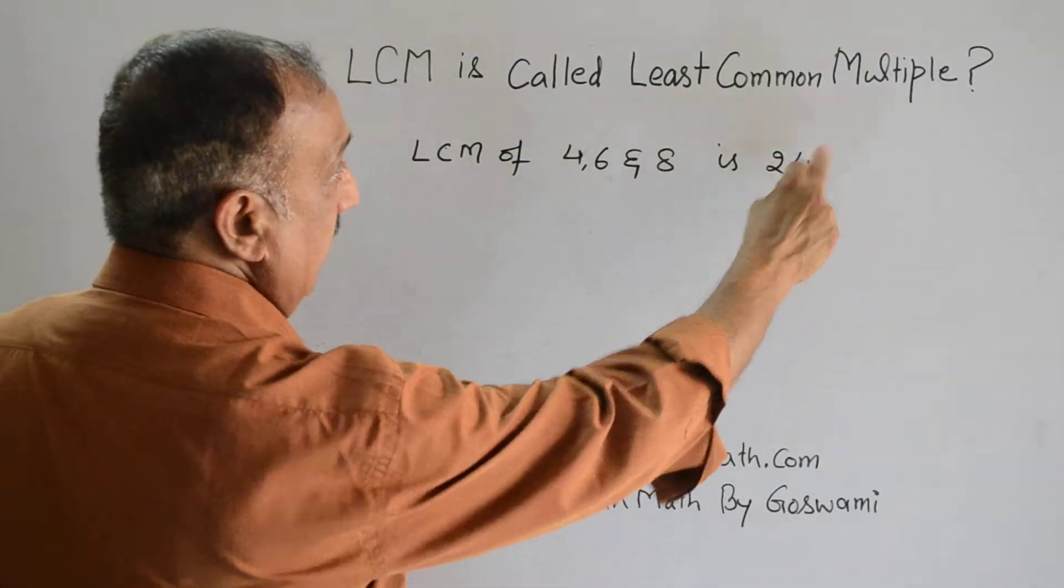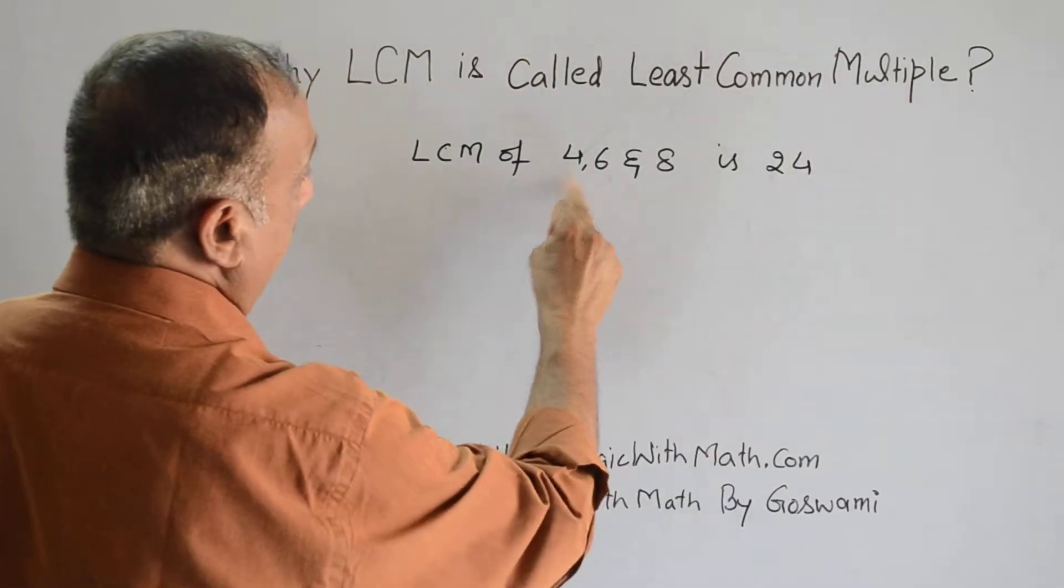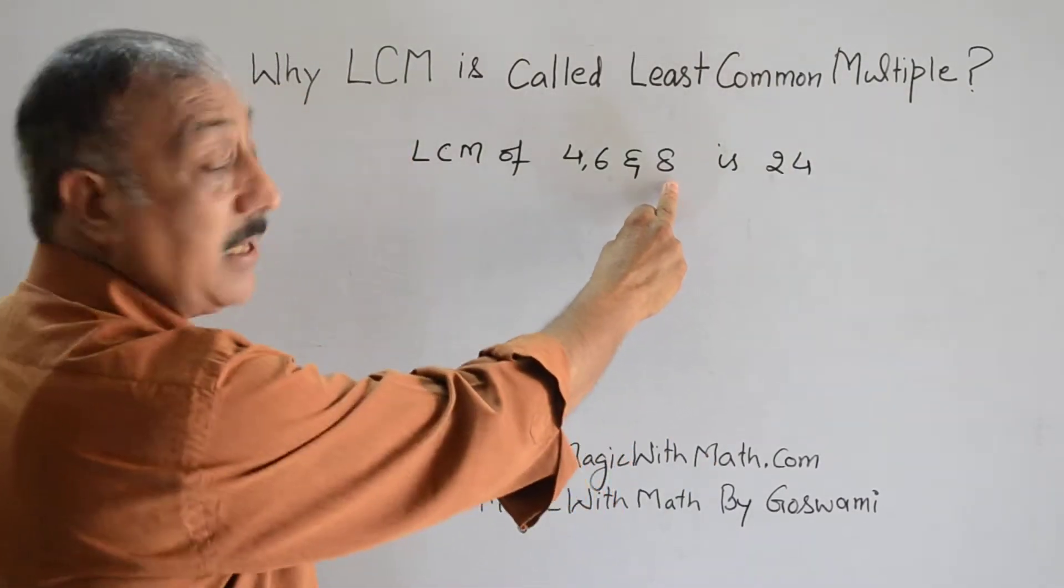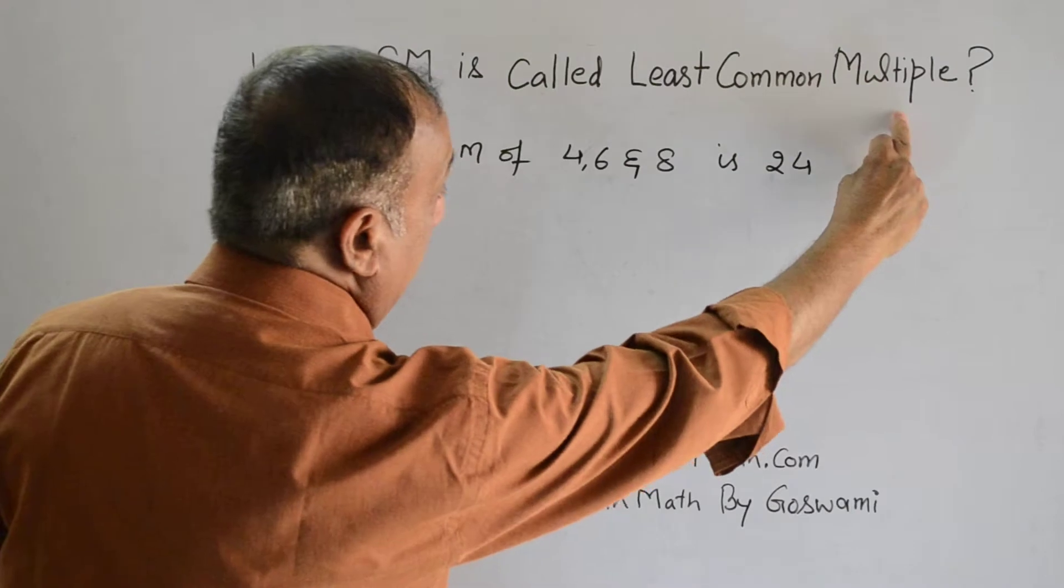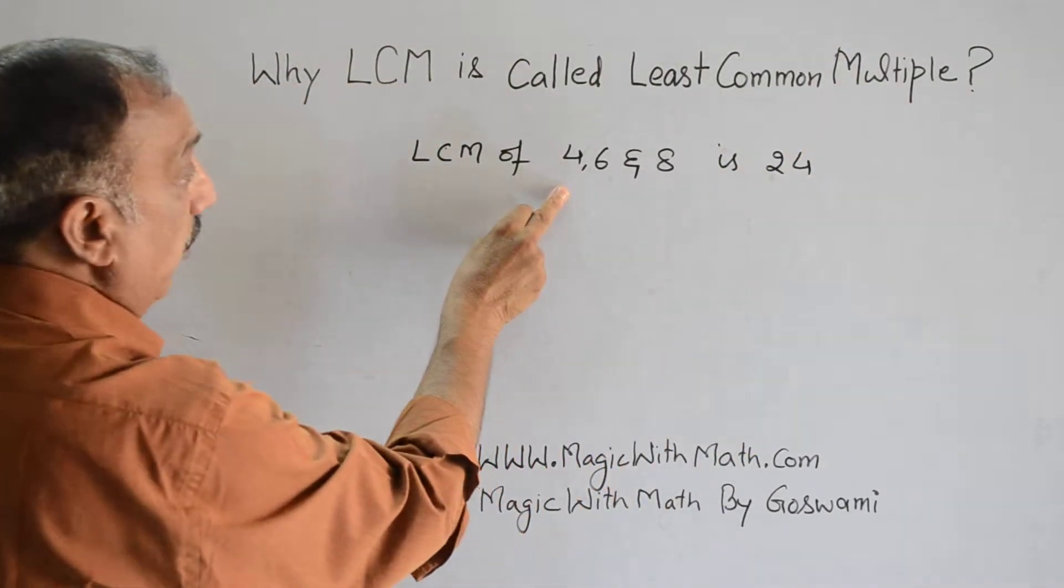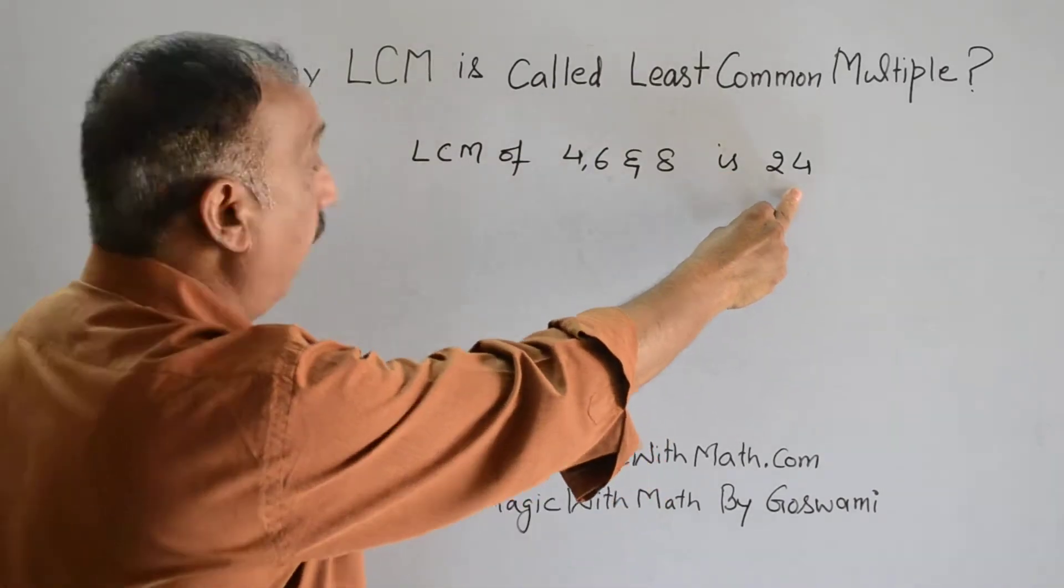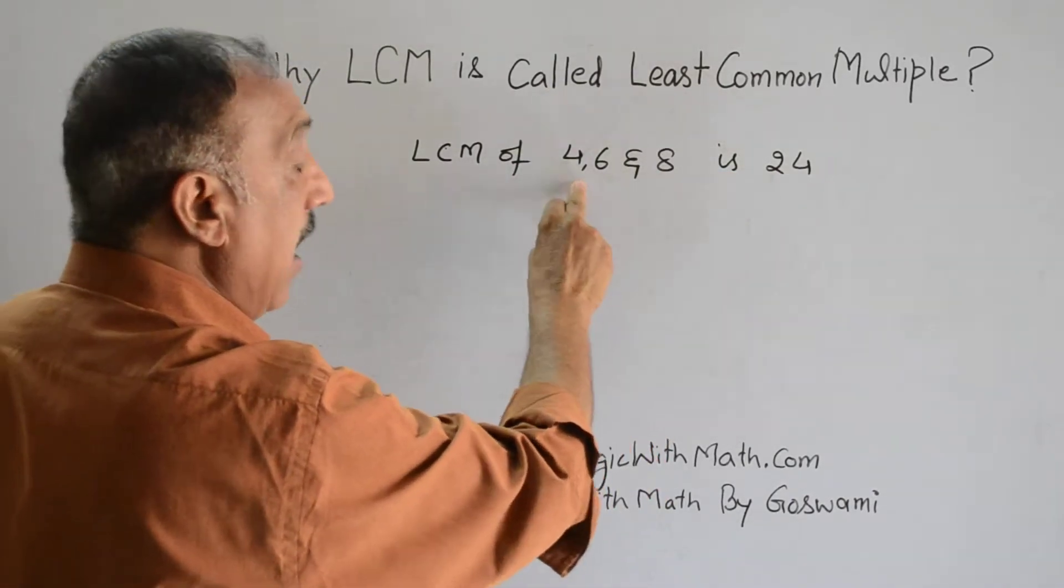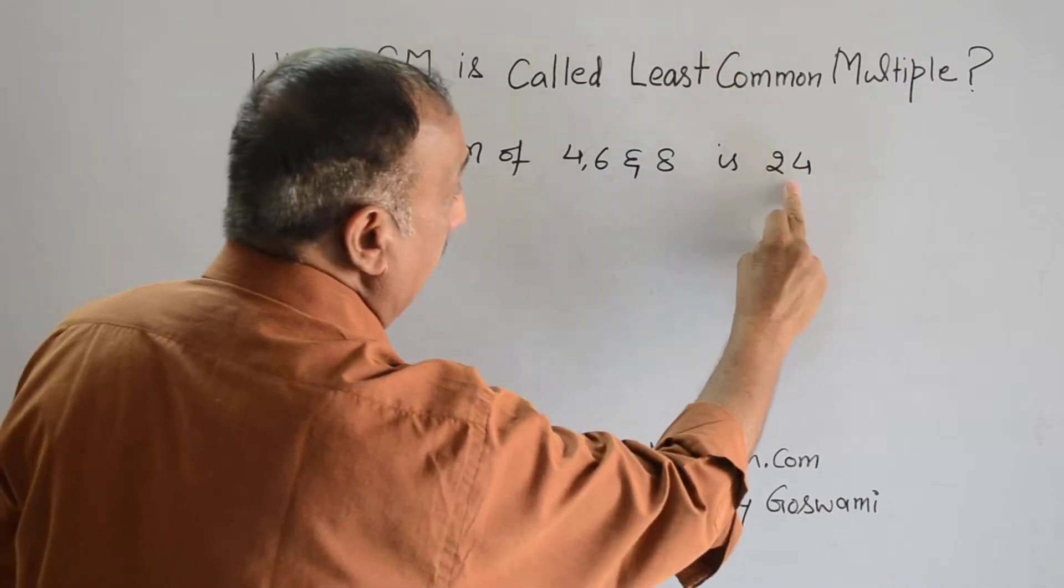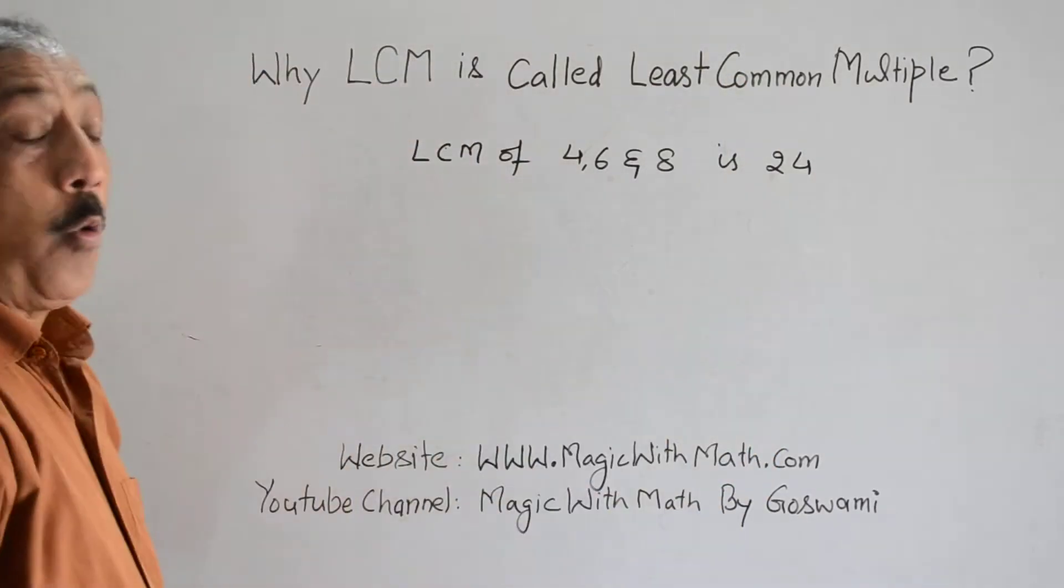24 is a multiple of 4, 6, and 8. It's a common multiple because all these three—4, 6, and 8—can divide 24. 4 can divide, 6 can divide, 8. All three can divide 24, so it's a common multiple. Why is it least?